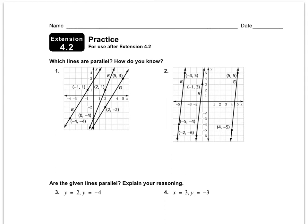They give us letters R, G, and B so we can label our lines and slopes based on the letter. Let's do line B first: up five, right three. So B has a slope of five over three.